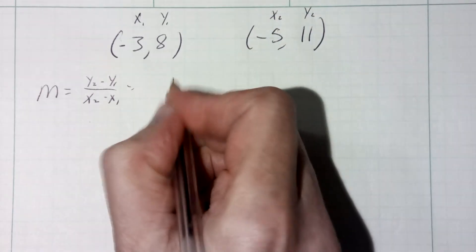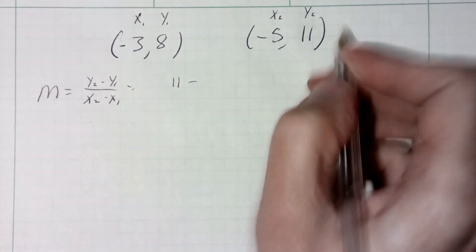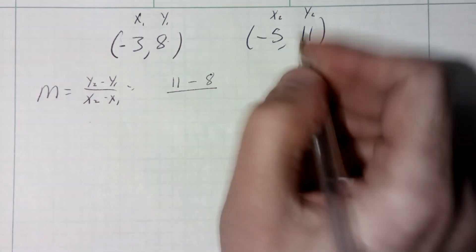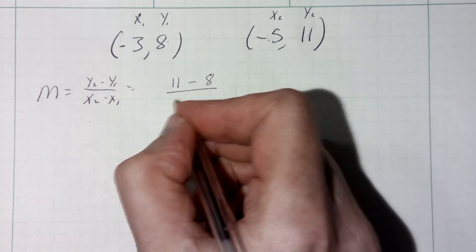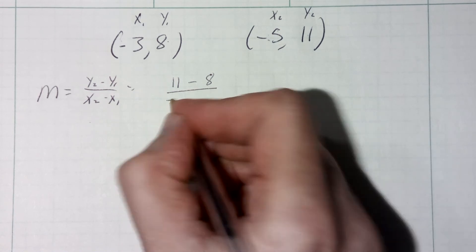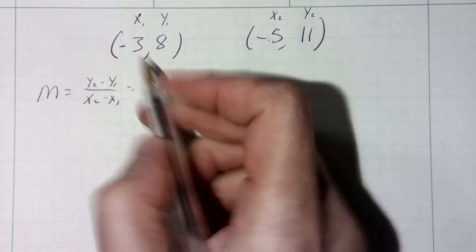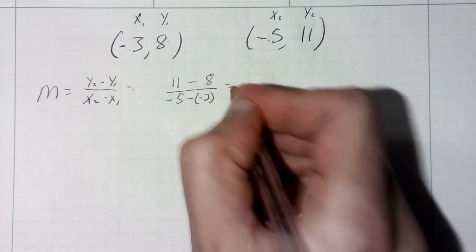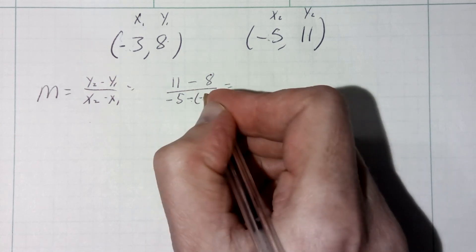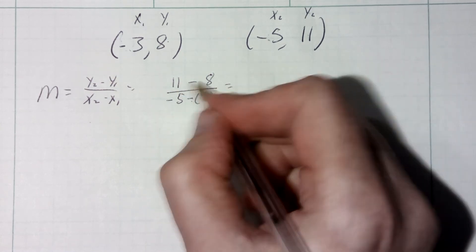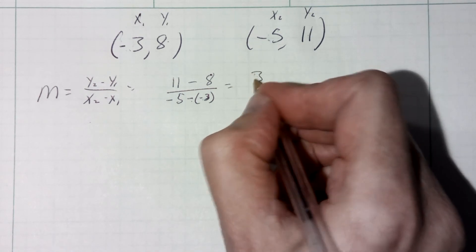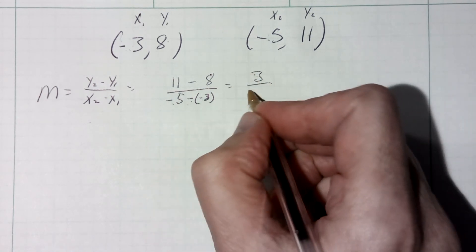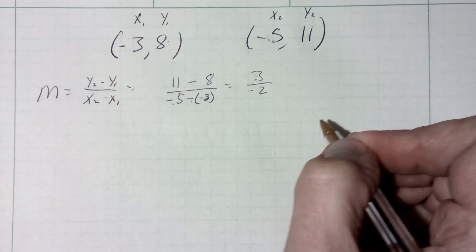So I'm going to do eleven — that's my second y — minus off my first y, which is eight, divided by my second x value, which is negative five, minus off my first x value, which is negative three. So I'm minusing a minus and minusing a minus — be careful. Eleven minus eight is three; negative five plus three is negative two. So I get a slope of negative three halves.